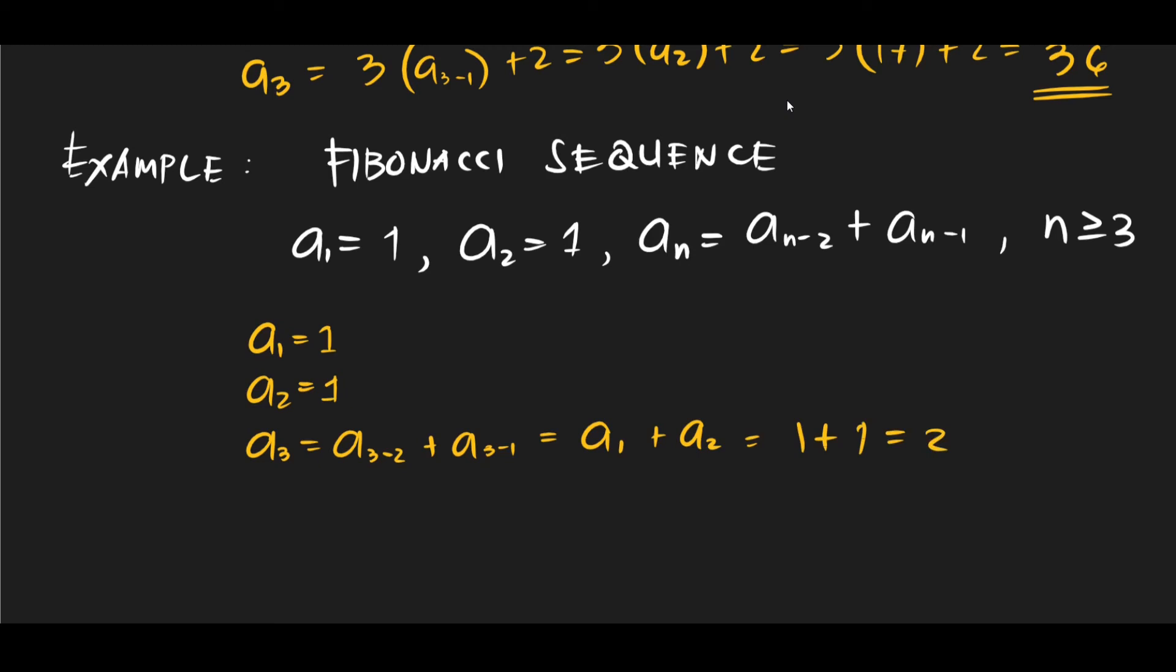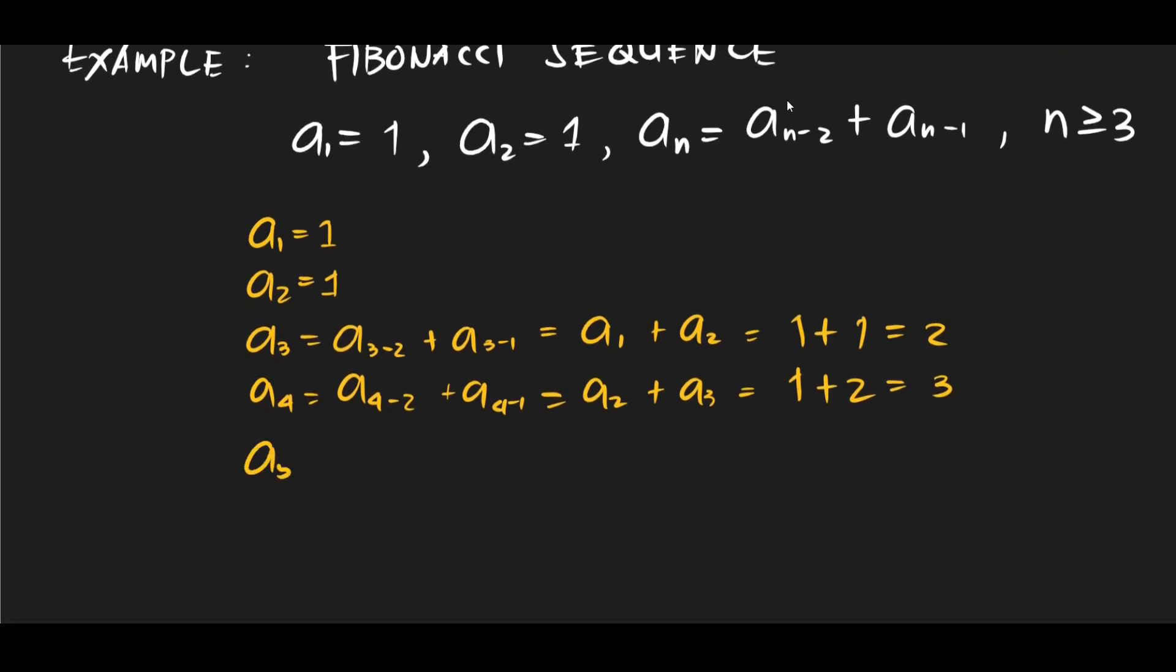Okay, let's now proceed to our a4. So a4 minus 2 plus a4 minus 1 is equal to a2 plus a3. So what is our a2? We have 1. And what is our a3? We have 2. So we get 3. Okay, let's calculate the fifth one. a5 minus 2 plus a5 minus 1. So a3 plus a4 is equal to, a3 is 2, and then our a4 is equal to 3. We get 5. Okay, so it proceeds from there.